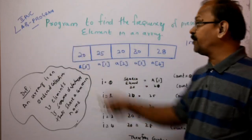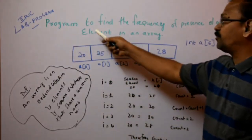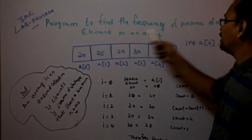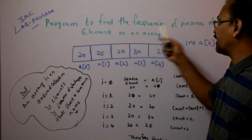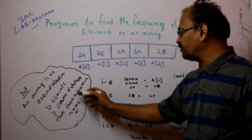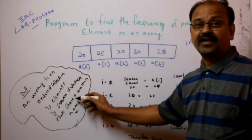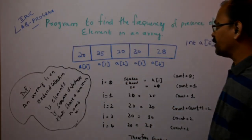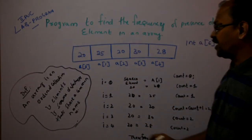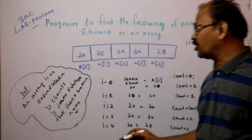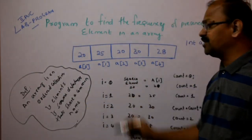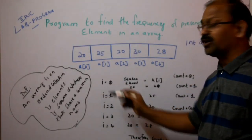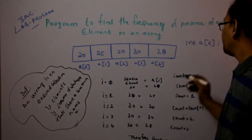So, can you see that program to find the frequency of presence of an element in an array? An array of same data type that shares a common name is known as an array. Once again I am repeating: an array is an ordered collection of elements of same data type that share a common name, and is known as an array.